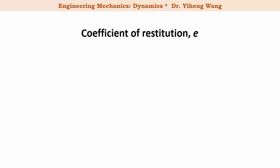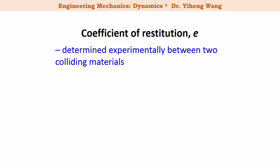Just like the coefficient for friction, coefficient of restitution, e, is generally determined experimentally. The value is normally between 0 and 1.